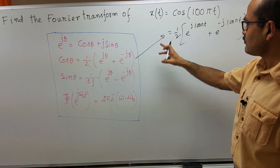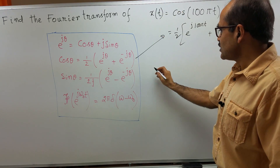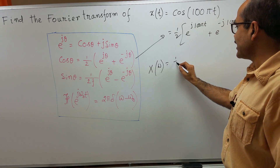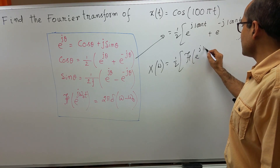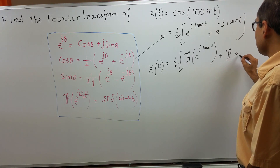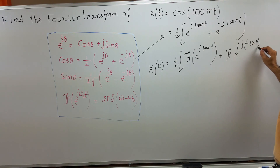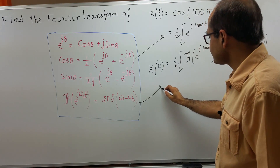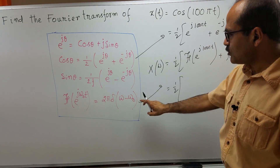We get the Fourier transform of these two terms to get the Fourier transform of this signal. So x(ω) is equal to 1 half times the Fourier transform of e to the power j times 100 pi t, plus the Fourier transform of e to the power j times minus 100 pi t. We make use of this formula here. The Fourier transform of e to the power j 100 pi t — where 100 pi is the omega 0.